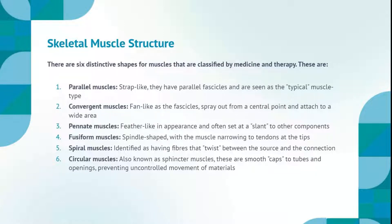4. Fusiform muscles, spindle-shaped, with the muscle narrowing to tendons at the tips. 5. Spiral muscles, identified as having fibers that twist between the source and the connection. 6. Circular muscles, also known as sphincter muscles, these are smooth caps to tubes and openings, preventing uncontrolled movement of materials.